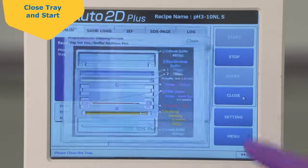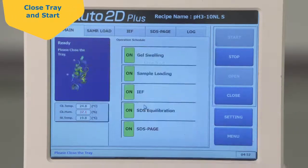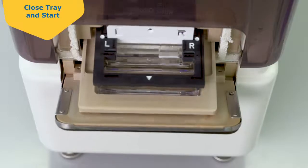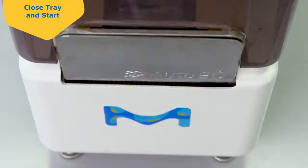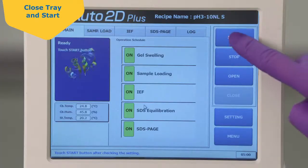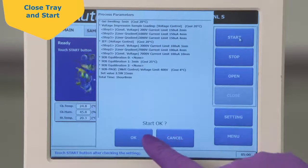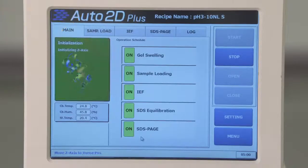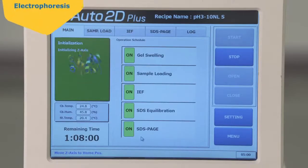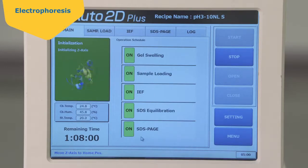Touch Close to close the tray. Touch the Start button and OK and the electrophoresis process will begin. The progress of electrophoresis can be monitored on the touch screen.